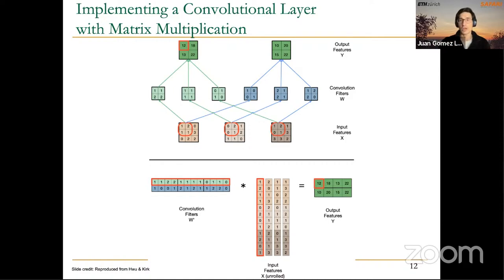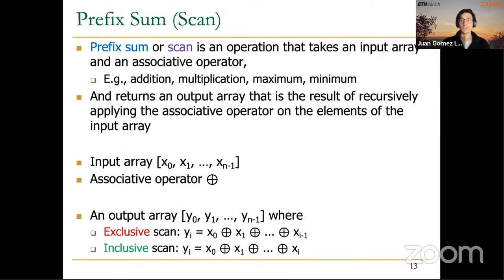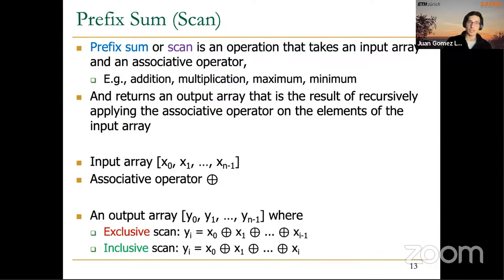Matrix multiplication allows applying more sophisticated optimizations. The next parallel pattern we covered is the prefix sum, also a very important primitive for many parallel applications.